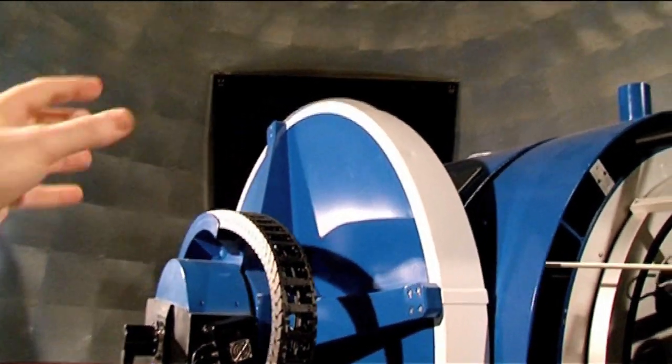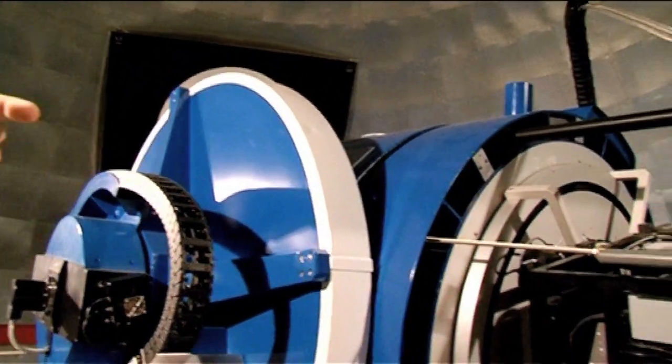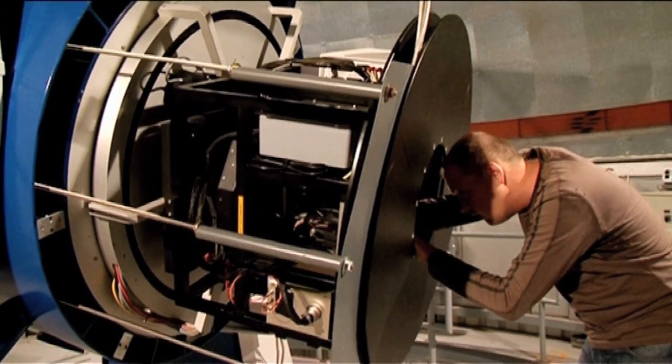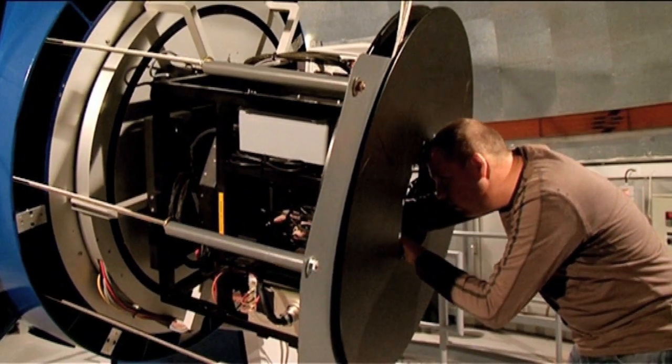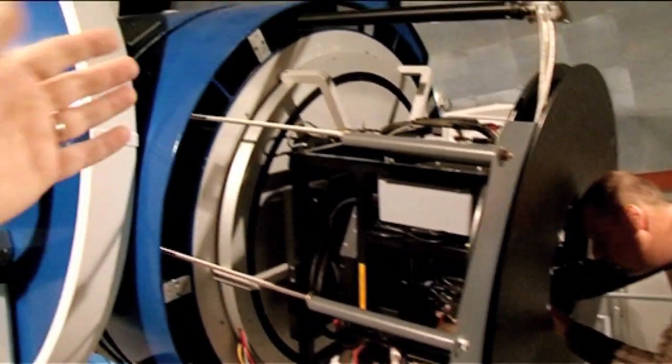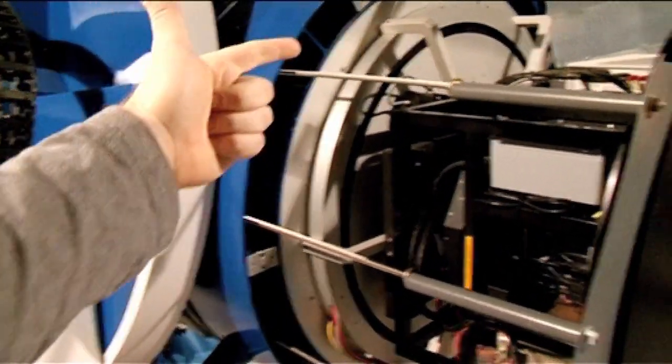So after the light hits the secondary mirror up the top there, if there's no tertiary mirror, it will come straight through onto this detector, this instrument here on the back of the telescope, which has been worked on at the moment.